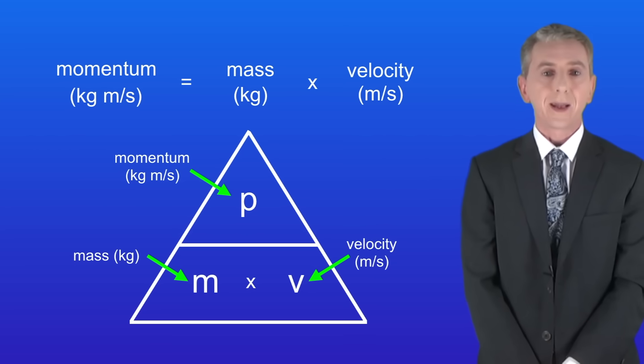We calculate momentum by using this equation. Momentum equals the mass multiplied by the velocity. And I've given you the triangle for this in case you prefer to use these. The unit of momentum is kilograms meter per second. Now you're not given this equation in the exam so you do need to learn it.